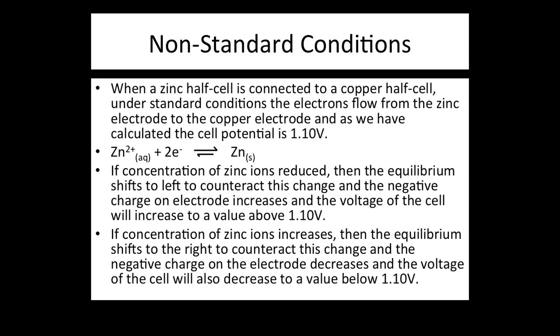When a zinc half cell is connected to a copper half cell under standard conditions, electrons flow from the zinc electrode to the copper electrode and the cell potential is 1.10 volts. If the concentration of zinc ions is reduced — i.e. less than one mole per decimetre cubed — the equilibrium shifts to the left to counteract this change, the negative charge on the electrode increases as more zinc metal is converted to Zn²⁺ ions, and the voltage of the cell increases to a value above 1.10 volts.